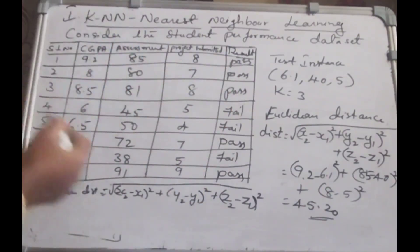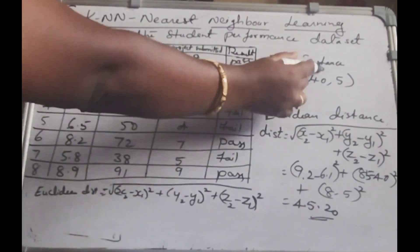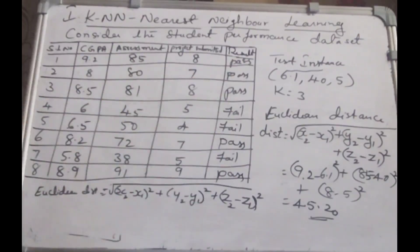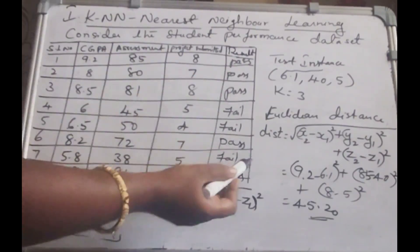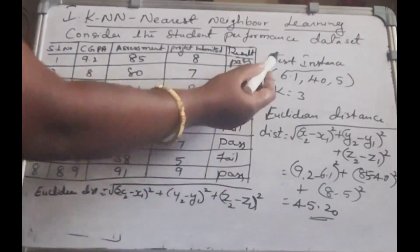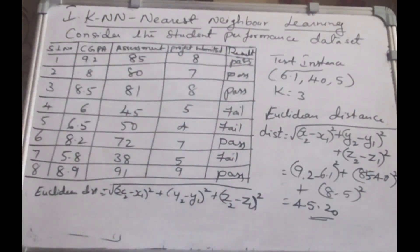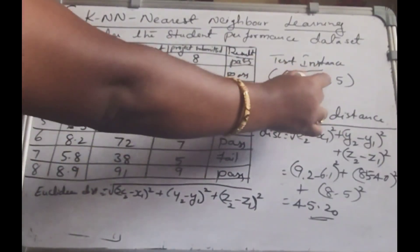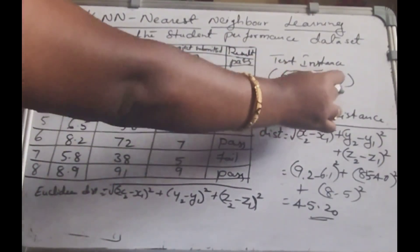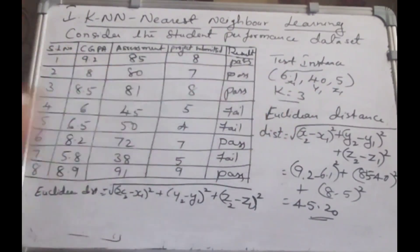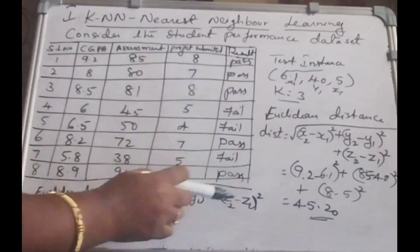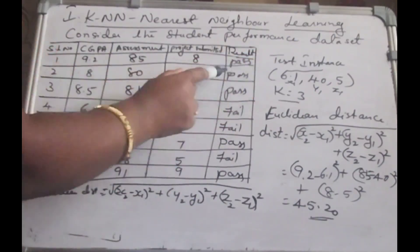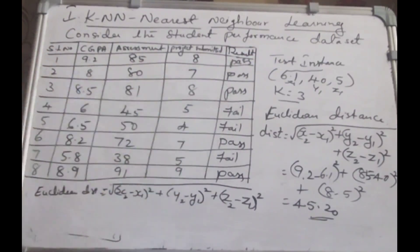Now I have to identify whether my test instance falls under the category pass or fail — that is my target variable. Whatever the test instance has been given, consider it has variables X1, Y1, and Z1. K is the number of nearest neighbors we have to consider to classify this test instance into the category pass or fail.